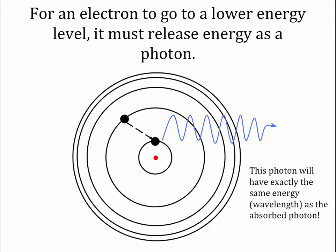Remember that electrons are lazy and want to be in the ground state. Once an electron is in an excited state, it wants to get rid of that extra energy and go back to the ground state. Energy has to go somewhere, so the electron releases a photon with exactly the amount of energy needed to jump down to the next state. If an electron is in the second energy level and drops back to the ground state, it releases a blue photon. That photon can go off in any direction — the electron doesn't remember where it got the energy.